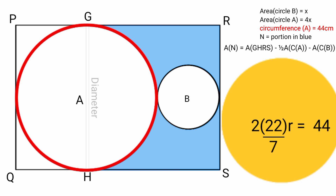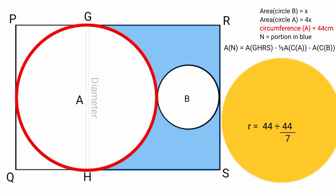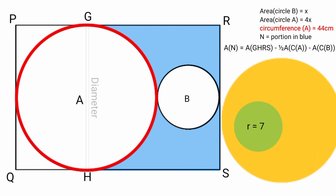Using π as 22/7: 2 × (22/7) × r equals 44. Making r the subject: r equals 44 divided by (44/7), which equals 44 × 7/44. The 44s cancel, so r equals 7. The radius of circle A is 7 centimeters.